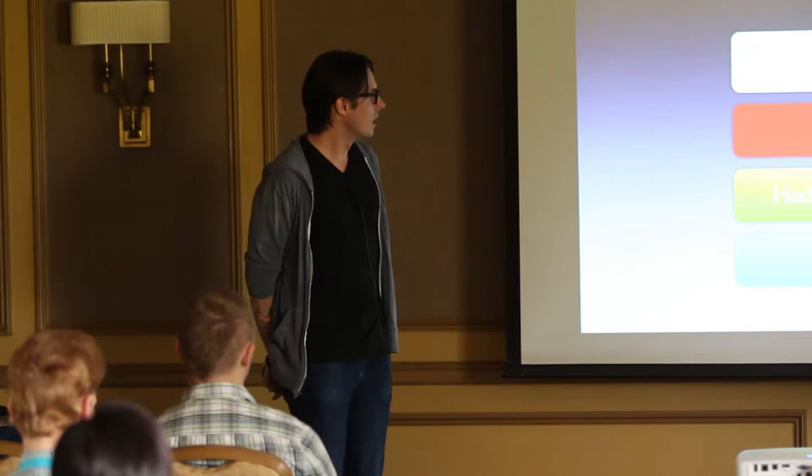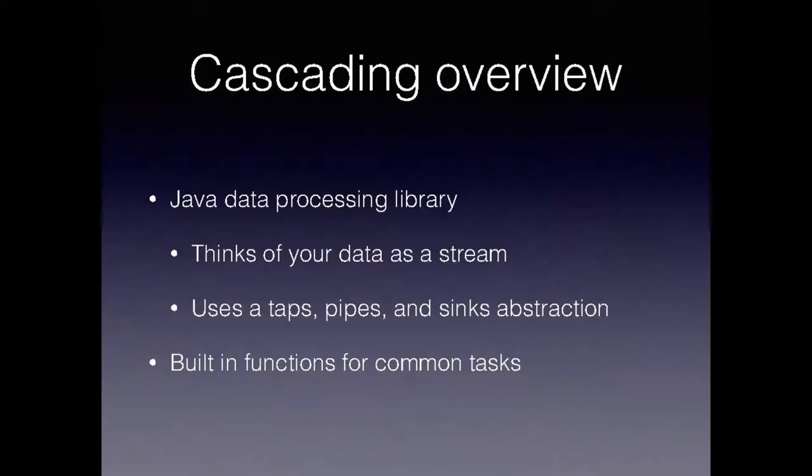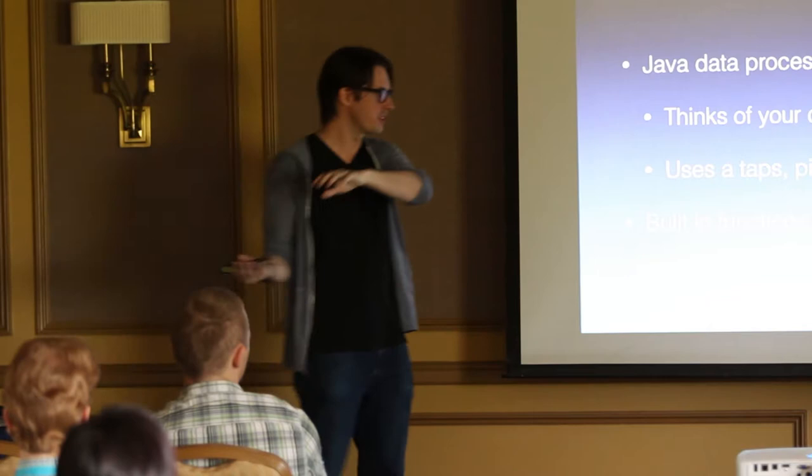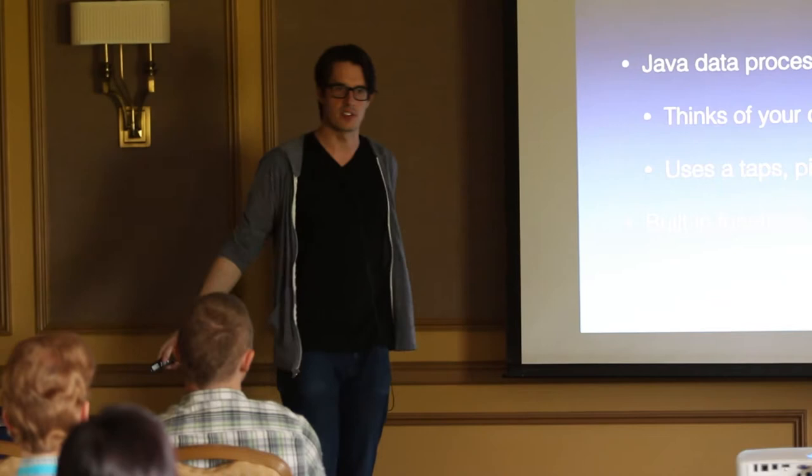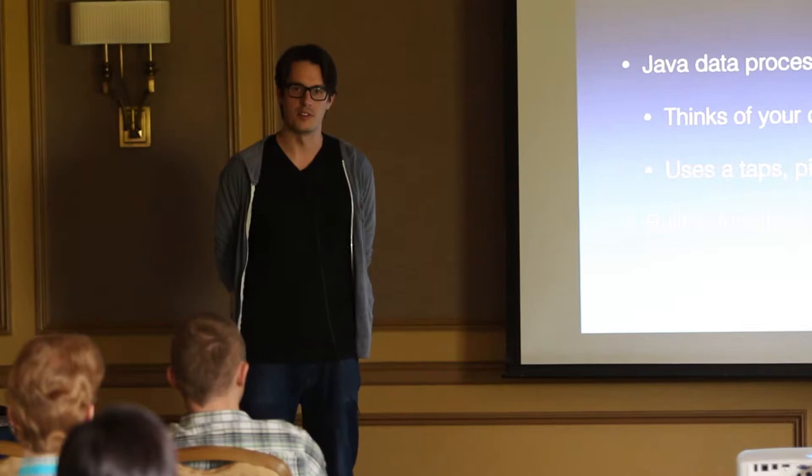This is hard for us to unit test. You ultimately ended up running it on the cluster most of the time. We started looking again for another level of abstraction. We looked into a project called cascading. Cascading is another Java data processing library that runs on top of MapReduce. It thinks of your data as a stream. It takes your initial set of data, uses a tap, pulls it in, puts it through a pipe, and then sinks it out to something on the other end.